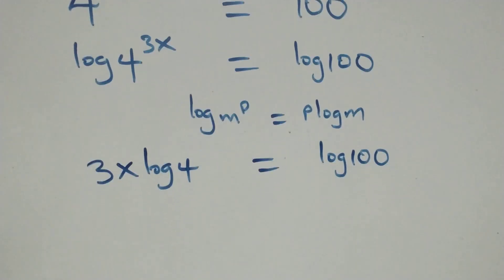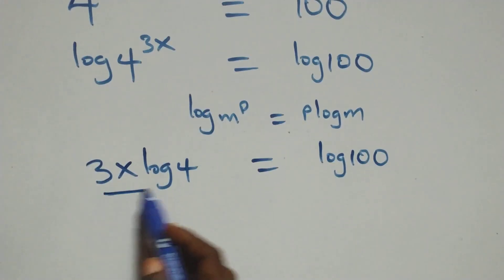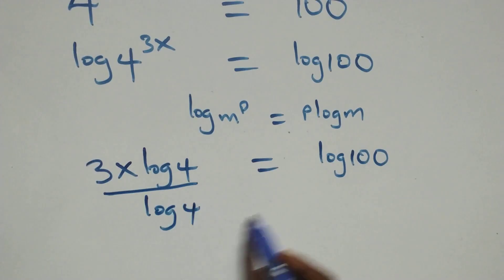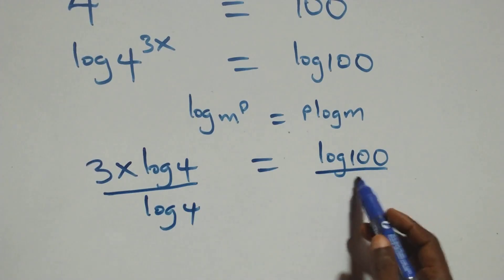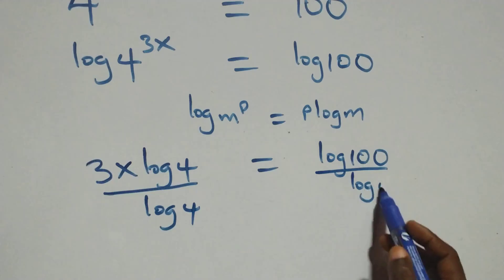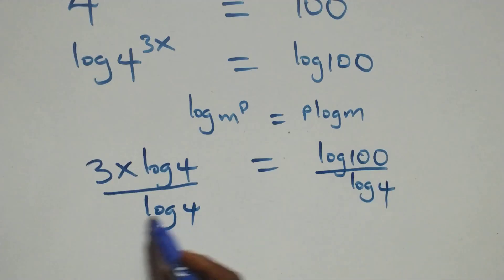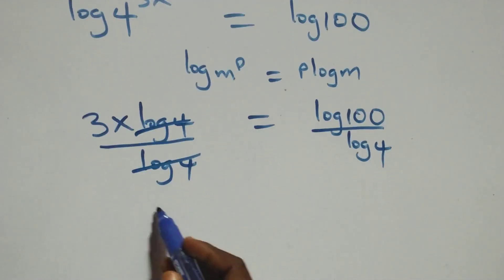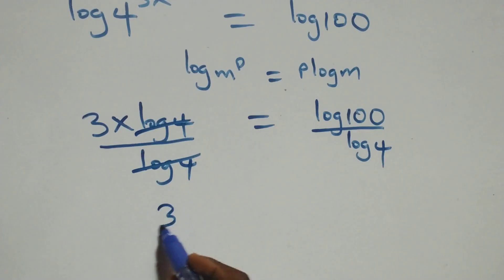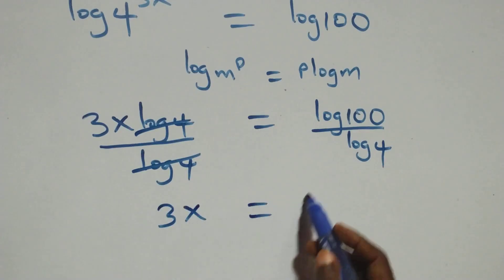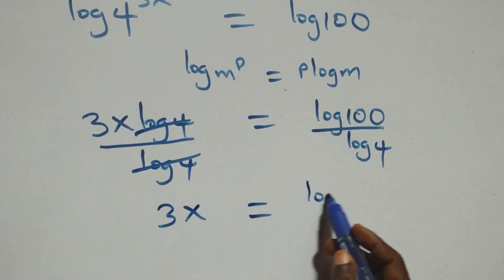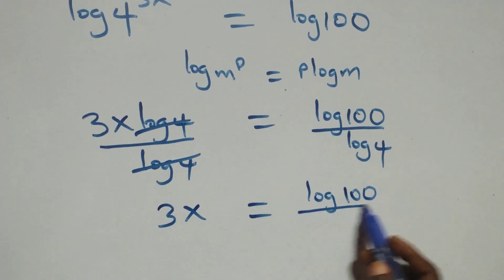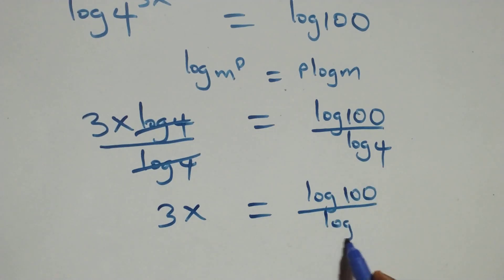The next step, we divide both sides by log 4 — divide this side by log 4 and also divide the other side by log 4. The log 4 cancels each other, and we have 3x equals to log 100 over log 4.